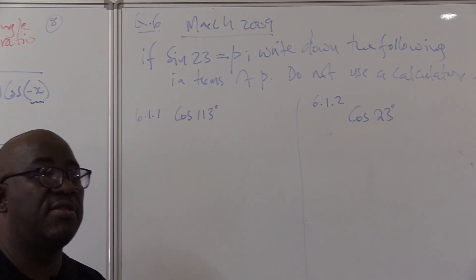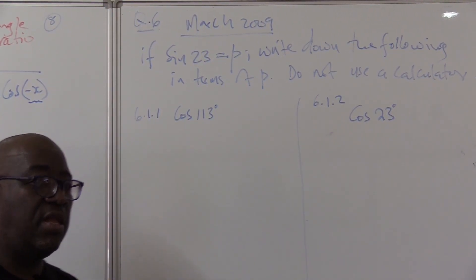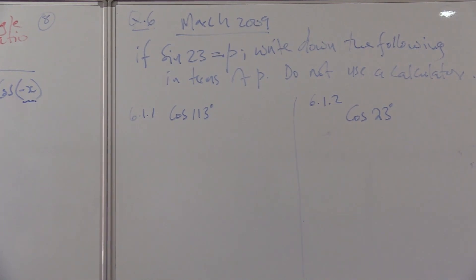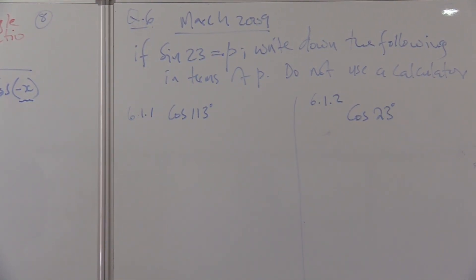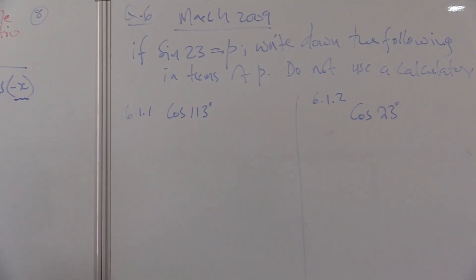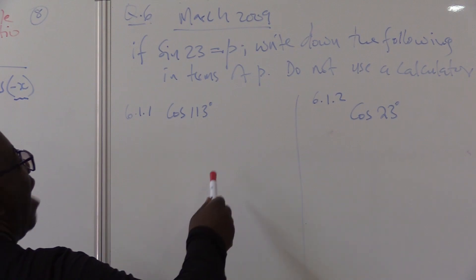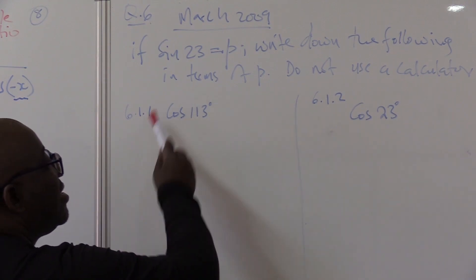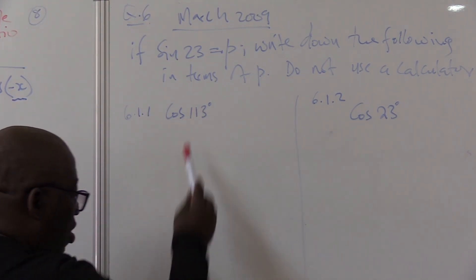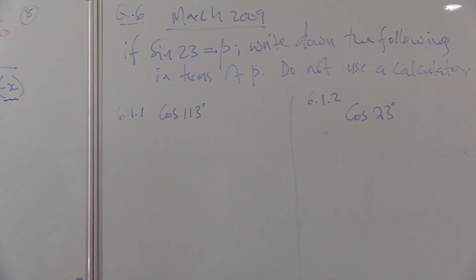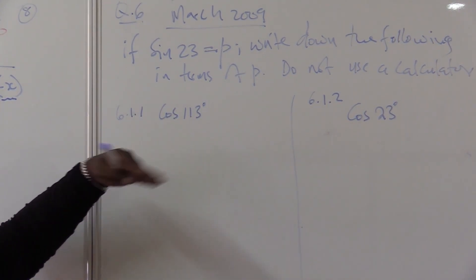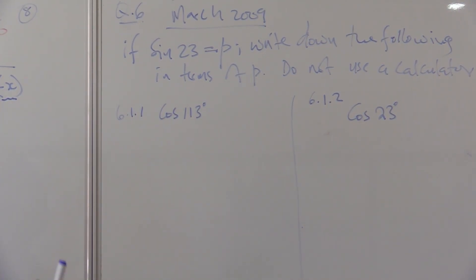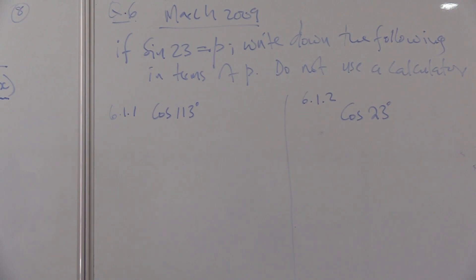Do not use a calculator. Let's work it out. What is this saying to me? I've got to find sine 23 in all these problems. I must find sine 23 so that I'll change it into P, because we want to express this in terms of P.